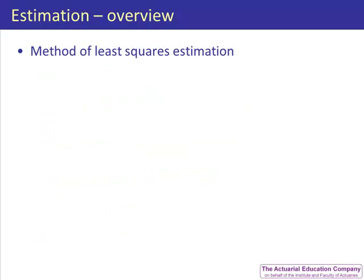The fifth unit, method of least squares estimation, details the third method of estimating parameters — this time by minimizing the error terms in our model. We will use this in subject CT6 to estimate parameters in a time series model of data.